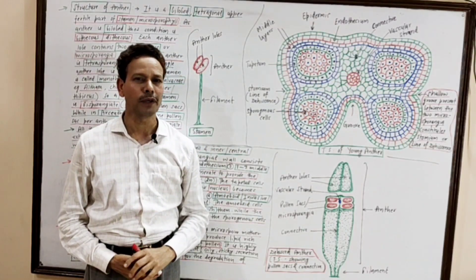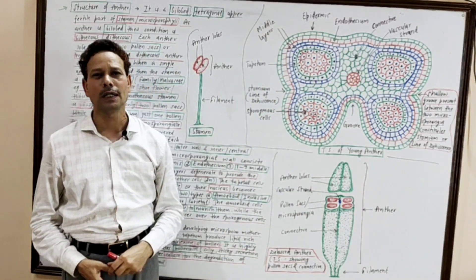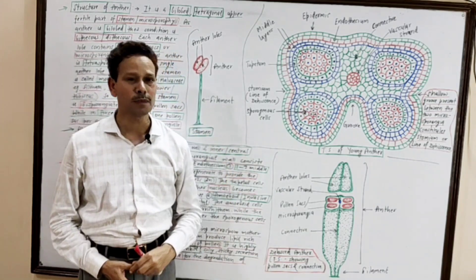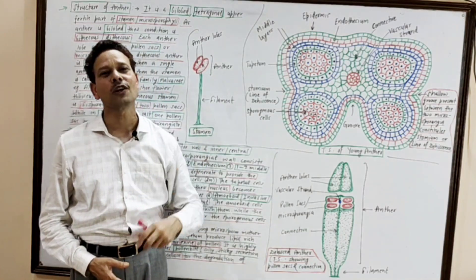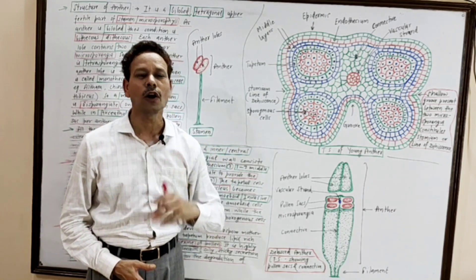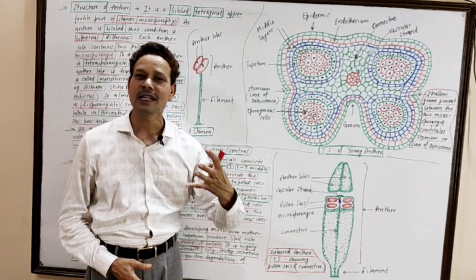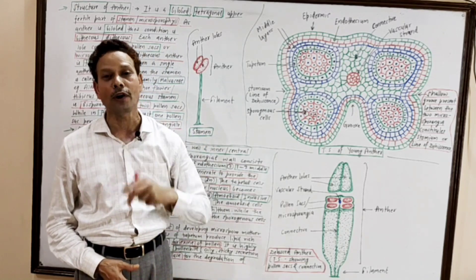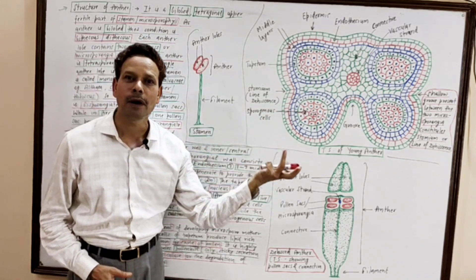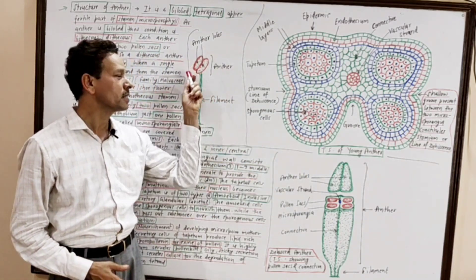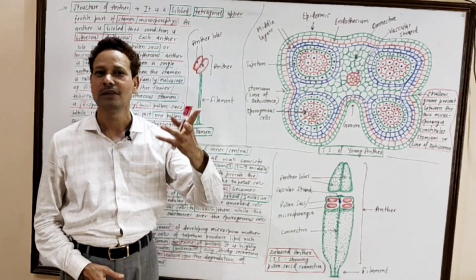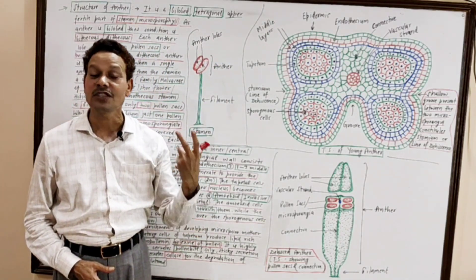Notes have been uploaded in the description of the video — please download your notes. Dear students, in this chapter of sexual reproduction in angiosperms, today we will cover the structure of the anther. In our last lecture, we discussed the structure of the stamen. The stamen consists of two parts: the lower sterile part, the filament, and the upper fertile part, the anther. In this lecture, I will cover all about the anther and its structure.